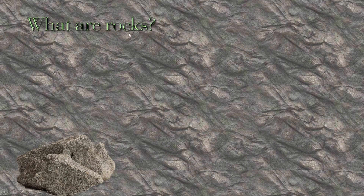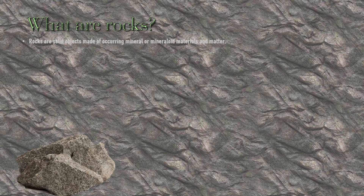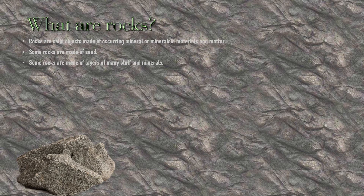What are rocks? Rocks are solid objects made of naturally occurring mineral or mineralite materials and matter. Some rocks are made of sand — for example, sandstone. Some rocks are made of layers of stuff and materials — for example, sedimentary rocks.